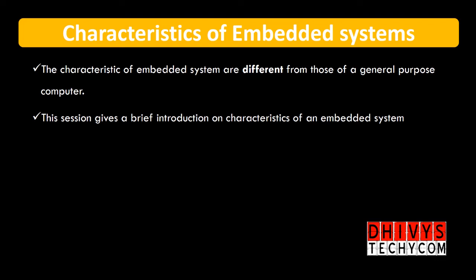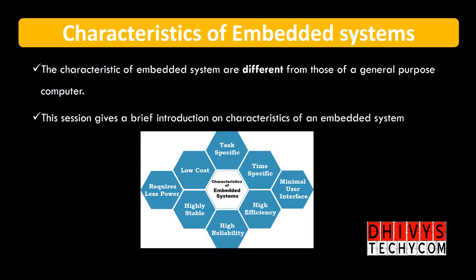There are different categories of characteristics, which we will see in the video in detail. What are the general categories of embedded system? There are some expectations. The expectations are mapped in the characteristics system. The first characteristics include: requires less power and low cost, task specific, time specific, minimal user interface, highly efficiency, high reliability, and high stable.